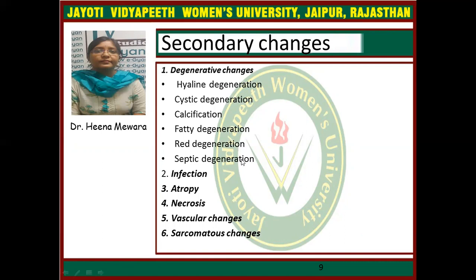Red degeneration mostly occurs in pregnancy. On naked eye examination, the red degenerative changes reveal a raw beef appearance; the red color is due to hemolyzed red cells and hemoglobin present in the fibroid. Septic degeneration occurs because of infection. Other secondary changes include atrophy, necrosis, vascular changes, and sarcomatous changes, which rarely occur in less than 0.1% of cases.